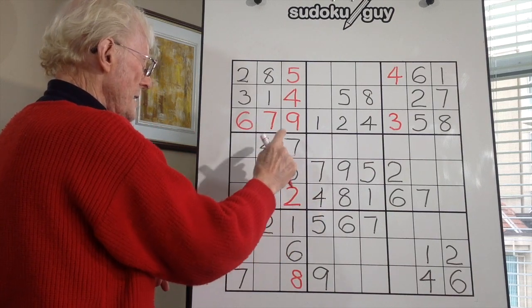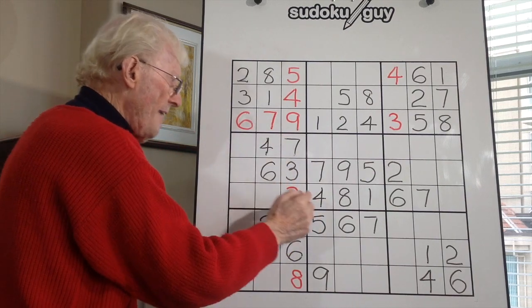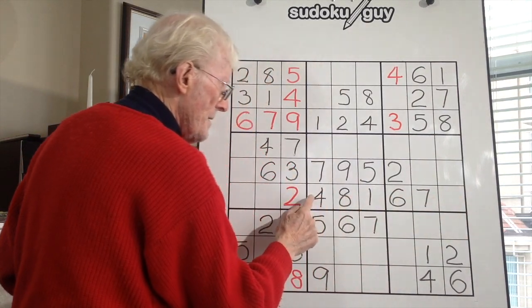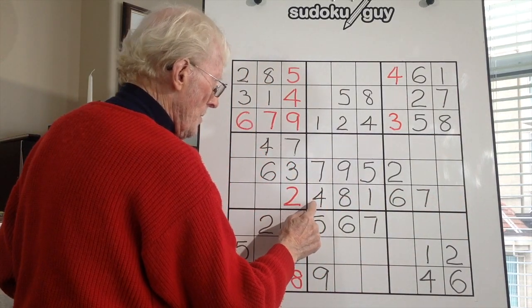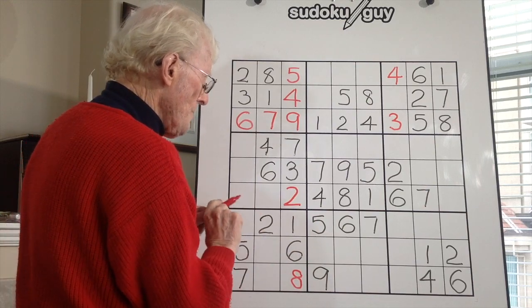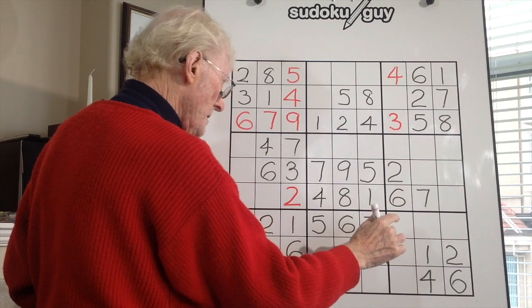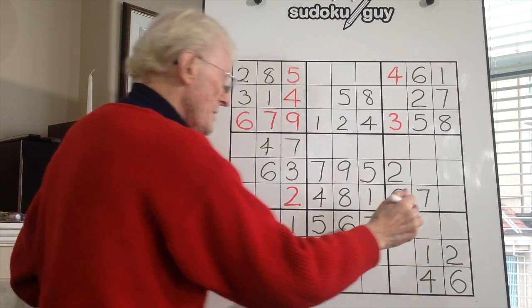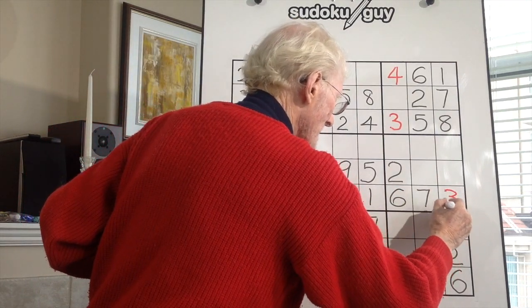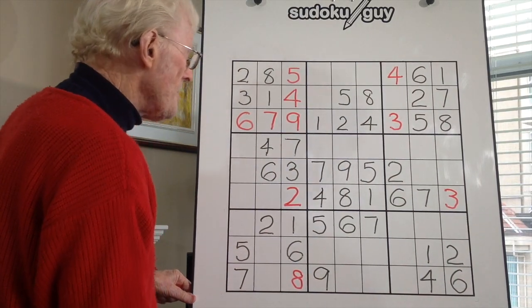Now let's go on to this block. Three, four, six, and seven — these numbers have to be along this row. They can't be in here, so the four, six, and seven go there.